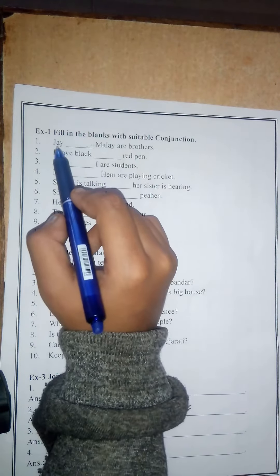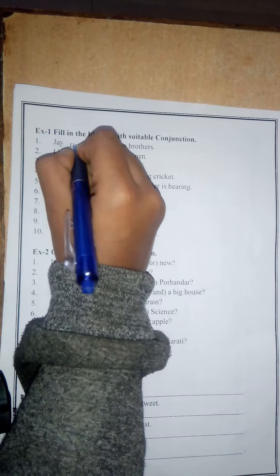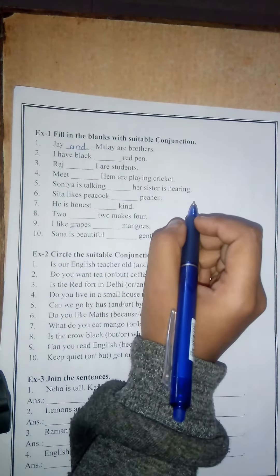Now look at number 1: Joy blank Malay are brothers. Here we have two names, so we have to join them. Joy and Malay are brothers.